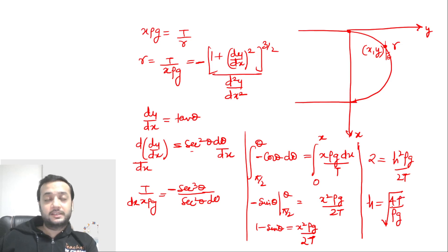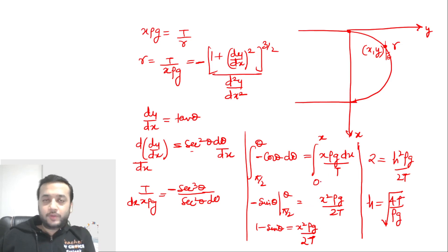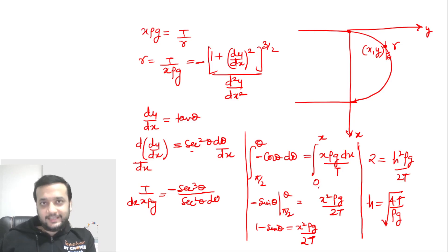So in my opinion √(4T/ρg) is the correct answer. You have also seen how to find the equation of trajectory. I hope you liked this solution. Thank you, and have a great day.